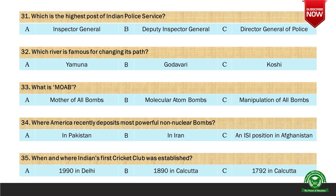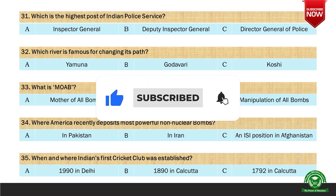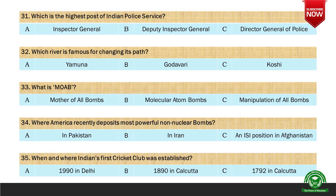Next question: Which is the highest post of Indian Police Service? Options are A. Inspector General (IG), B. Deputy Inspector General (DIG), and C. Director General of Police (DGP). And the right option is C. Director General of Police.